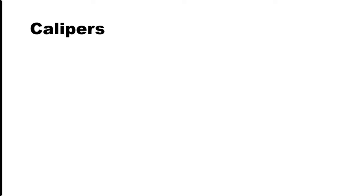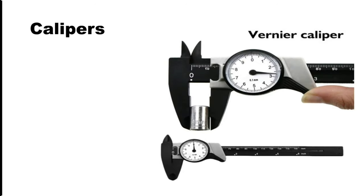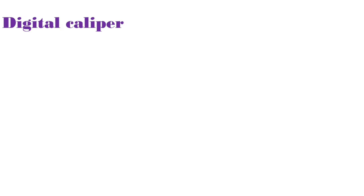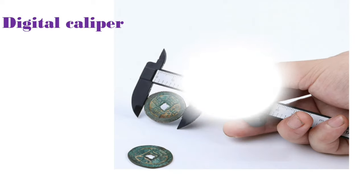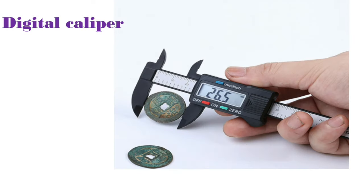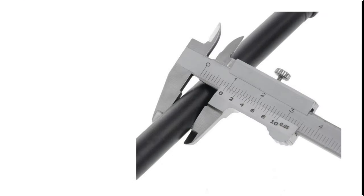First is calipers. Among that, the first is dial caliper. As per the name, you can see there is a dial over there and you can look into that and take the reading. Second is digital caliper, and as per the name, we can see the reading directly on the caliper — here it is 26.5. This is thickness caliper.